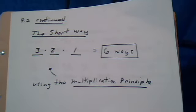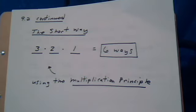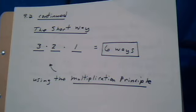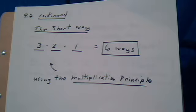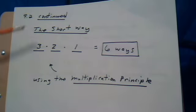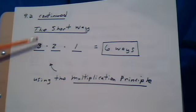The short way, you recognize that you could use the multiplication principle. And the way you recognize it is that you see that the procedure, it's a procedure that has steps. First step, assign lane one. Second step, assign lane two.